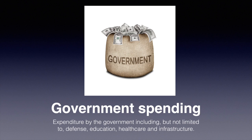Government spending includes all spending by the government on final goods and services such as defence, education, and healthcare. It does not include transfer payments, as when money is exchanged in these conditions it is not given in exchange for a good or service. It constitutes 23.9% in China and 19.8% in Pakistan. This information is provided by the Wall Street Journal and the Heritage Foundation; the reference is included in the video description.